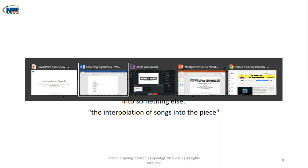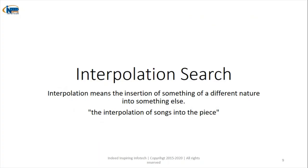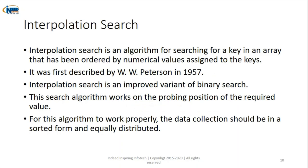The fourth algorithm is interpolation search. Interpolation means inserting something of a different nature into something else — for example, noise from a truck interrupting a conversation. In interpolation search, it is an algorithm for searching for a key in an array that has been ordered by numerical values assigned to the keys. It is essentially an improved version of binary search; binary search is the base algorithm for interpolation search as well.